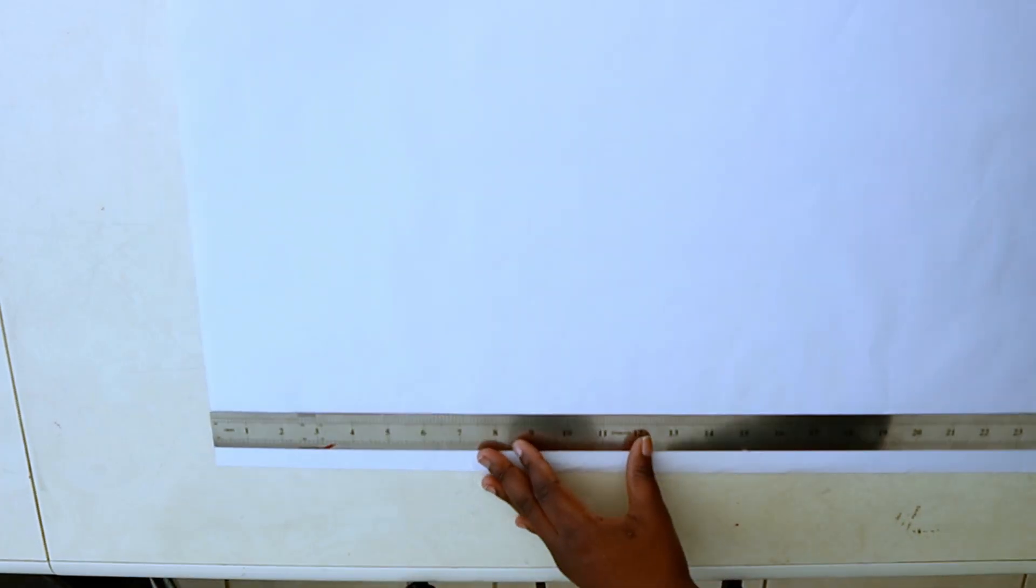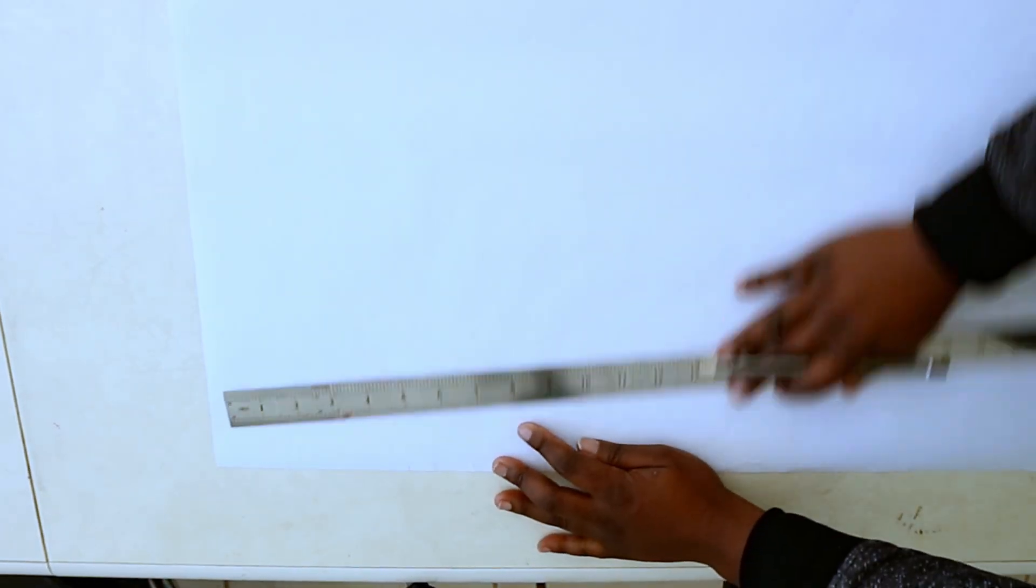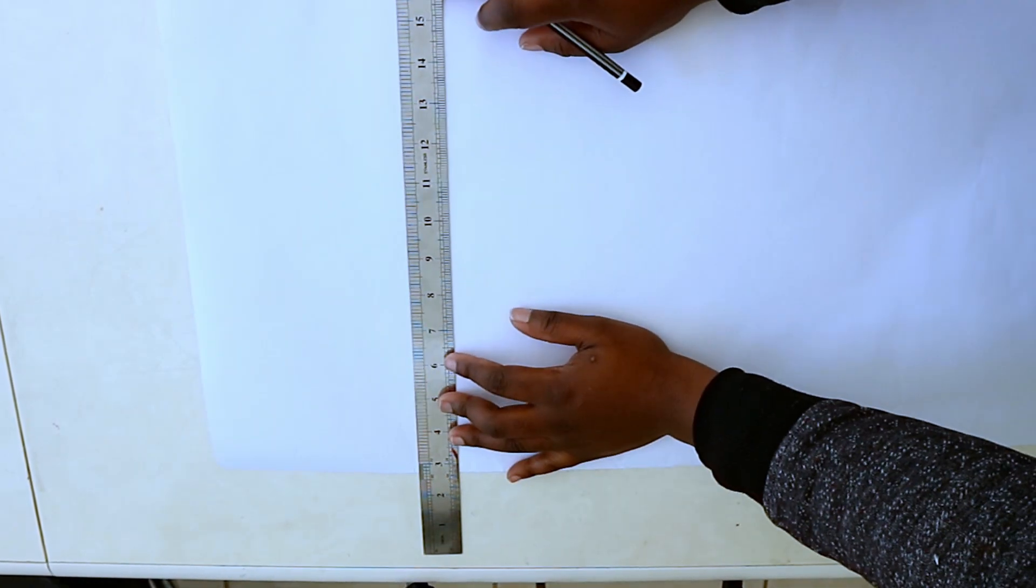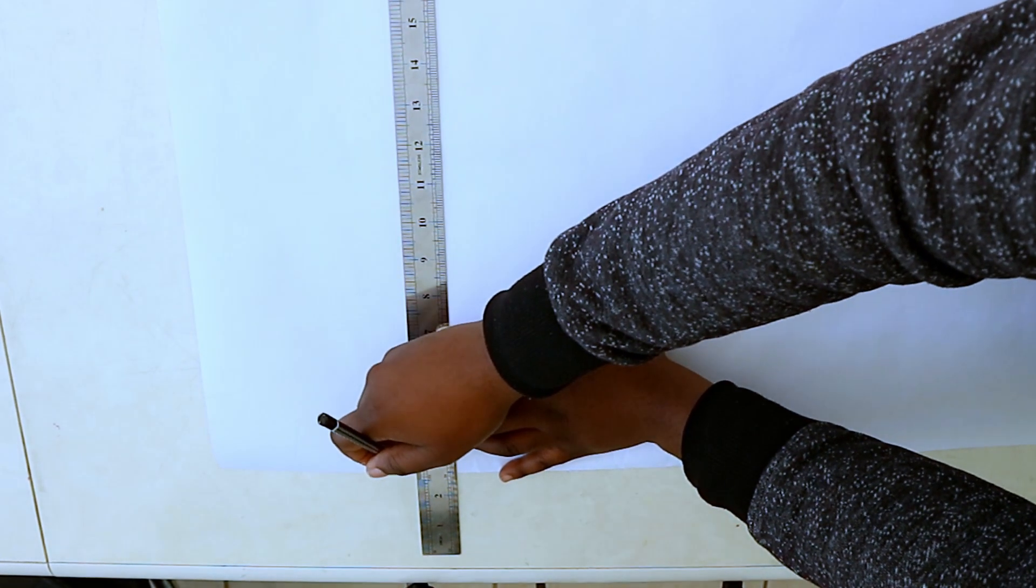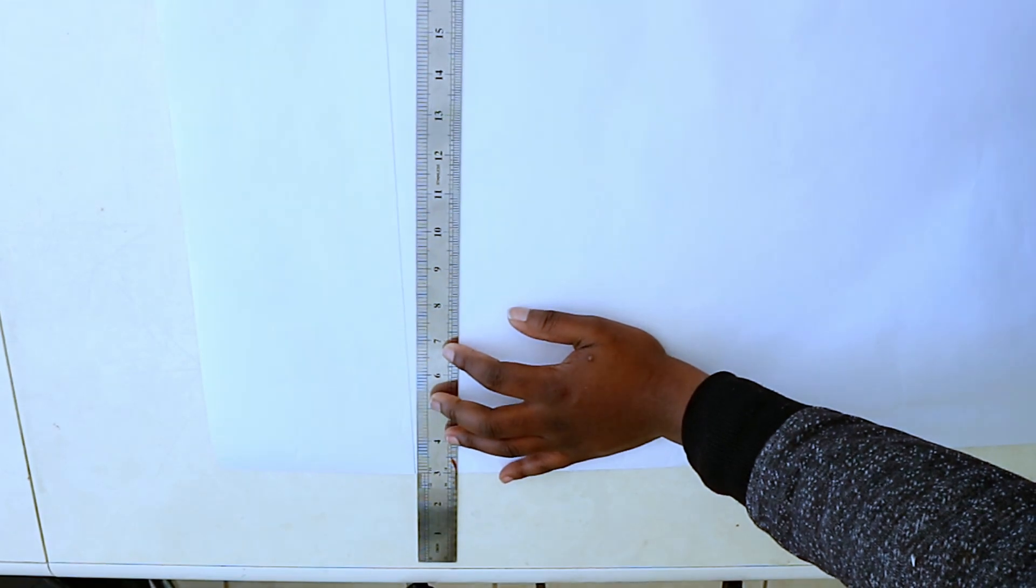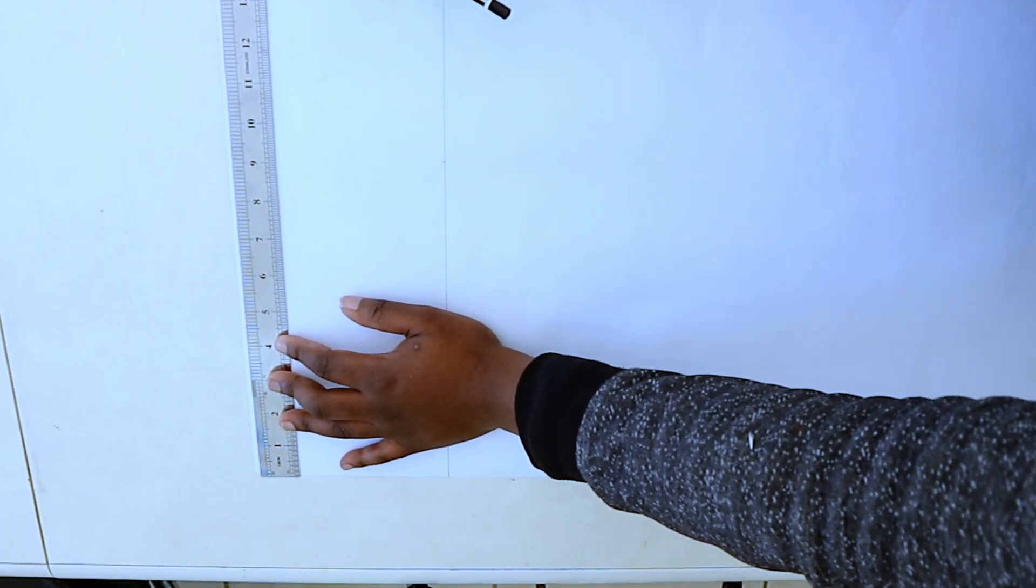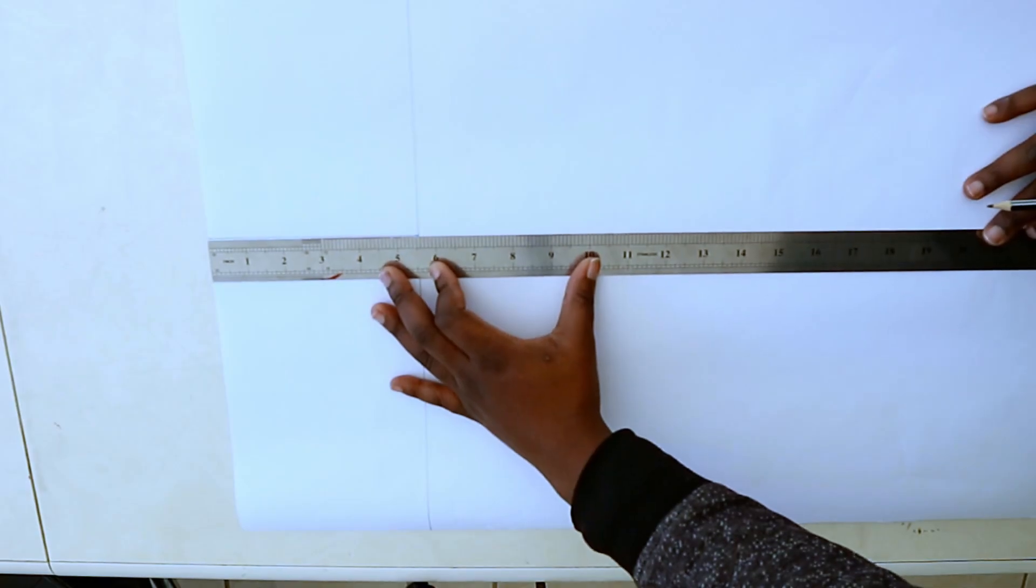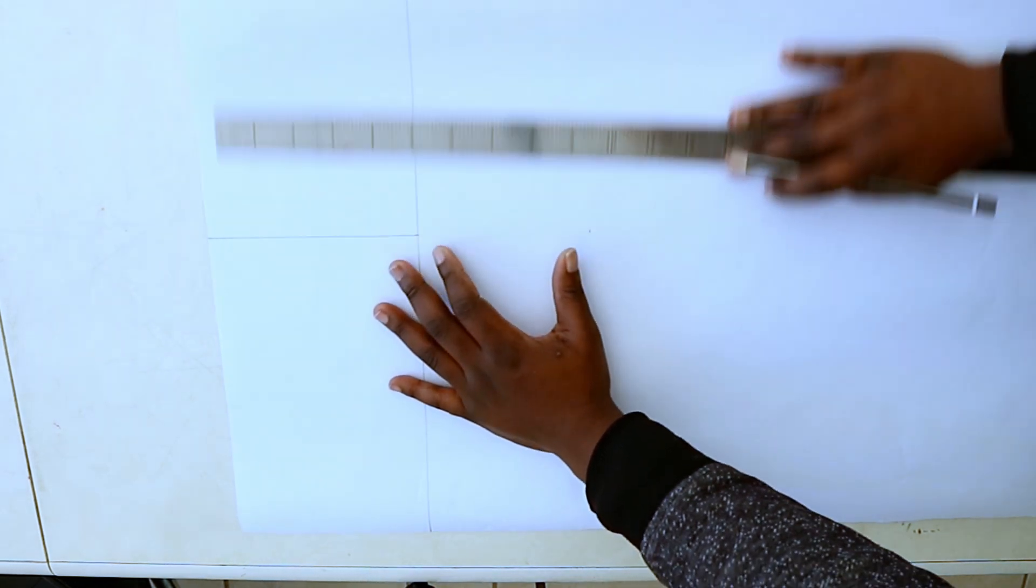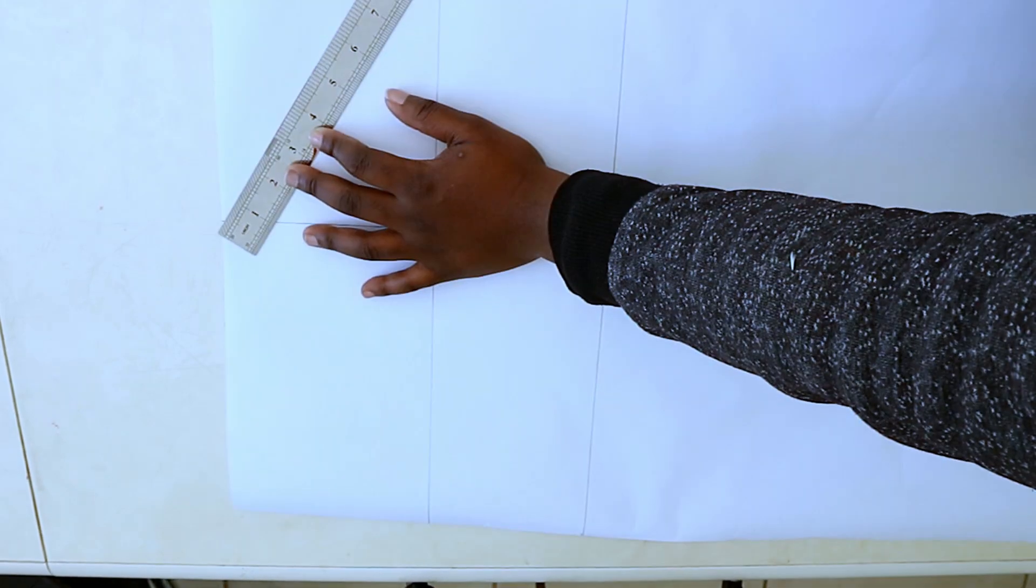Moving on to the sleeves, which is actually very easy. Mark the sleeve head measurement, which is your bust measurement divided by 6 inches plus 1 inch. Square that measurement across the paper. Find the midpoint, and from the top of the paper, mark the bicep length or half sleeve length.